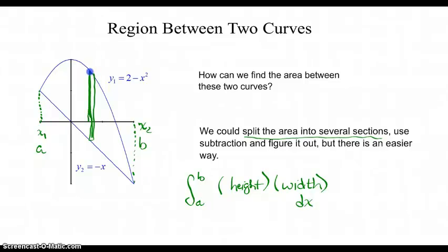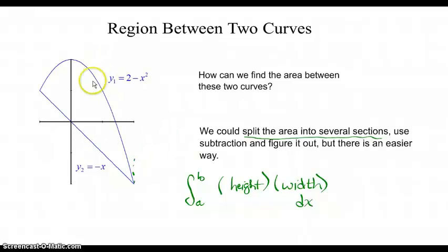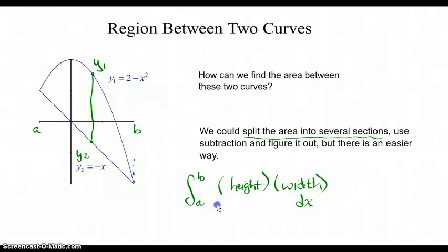Let me draw this more clearly. Here is a, here is b. Our widths are still dx. The top of the rectangle is bounded by y1, and the bottom of the rectangle is bounded by y2. So the difference between y1 and y2 gives us the height of our rectangle. If we add up infinitely many of them with width dx from a to b, that gives us our region in the plane.